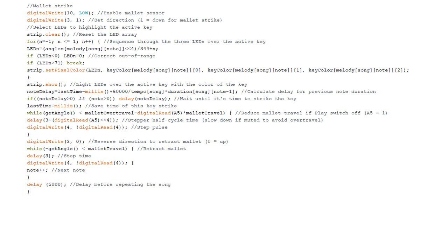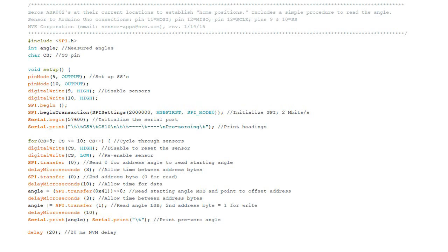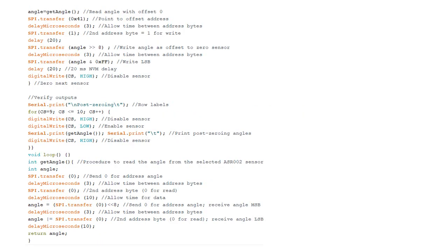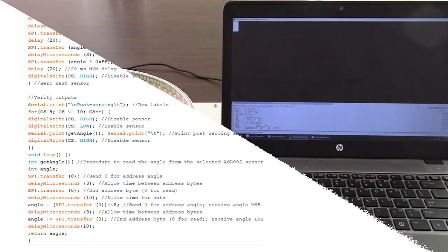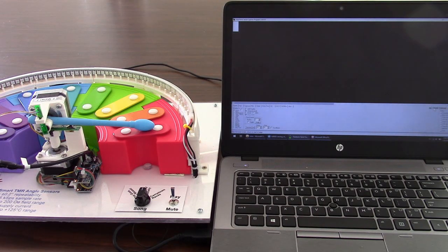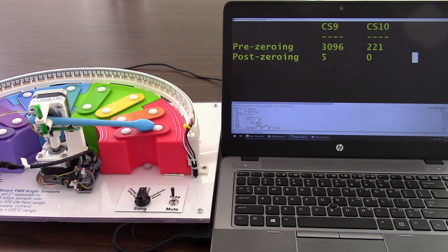So after installing the magnets, we ran a separate little program to zero the sensors at the mallet home position. These are the sensor readings before and after zeroing.